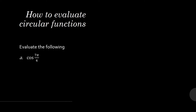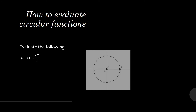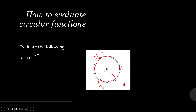Evaluate cosine of 7π/4. The first thing to do is find the reference angle for 7π/4. Since 4π/4 equals π, you add 3π/4 to make 7π/4. Together they make 7π/4. The reference angle is the angle formed by the horizontal axis and the terminal side of the angle, and that is equal to π/4.